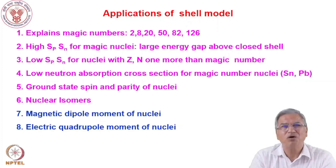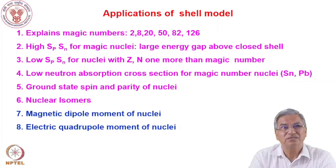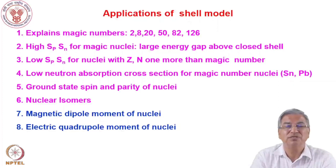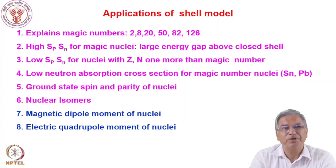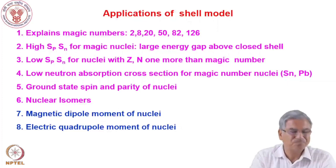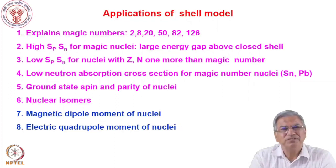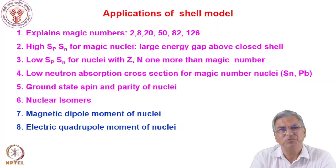The shell model can explain the ground state spin and parity of nuclei — something the liquid drop model could not. The liquid drop model also could not explain nuclear isomers. Using the shell model we can explain the existence of isomeric states. Nuclear isomers are excited states of nuclei with metastability — having a higher half-life — so they don't decay by gamma emission immediately. While gamma decay normally takes picoseconds, isomers may take milliseconds, seconds, minutes, or hours. Magnetic dipole and electric quadrupole moments can also be explained using the shell model.